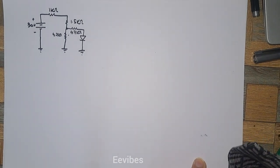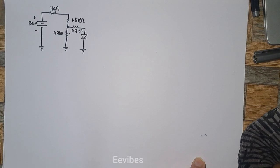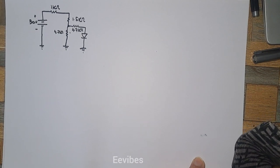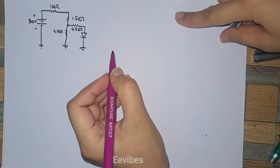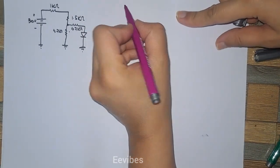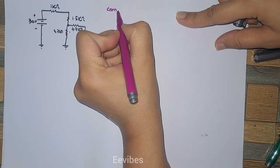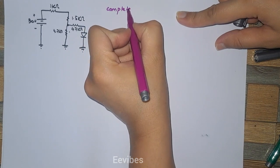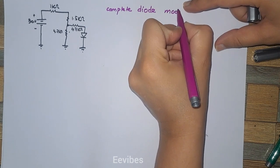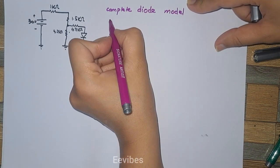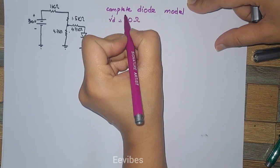Hi everyone, this is Asma Mushtaq from the Double E Vibes. In this video lecture I'm going to explain how you can solve a circuit containing a diode. In this particular problem, I'm going to consider the diode as a complete diode model, and for that you have been given the dynamic resistance of the diode equal to 10 ohms.